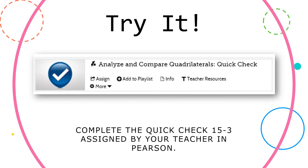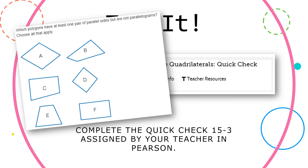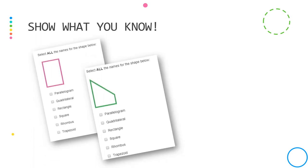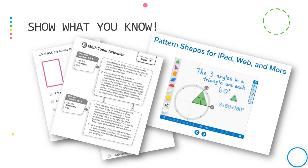Now it's your turn. Complete the quick check 15-3 assigned to you by your teacher in Pearson, where you'll see questions like: Which polygon has at least one pair of parallel sides but is not a parallelogram? Choose all that apply. Or: What attributes do all four polygons have? When you finish and you're feeling confident, move on to the show what you know section to complete your formative assessment. Then check out the additional resources page for a math tools activity and a pattern shapes app on the math learning center.